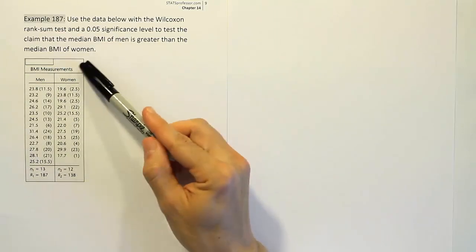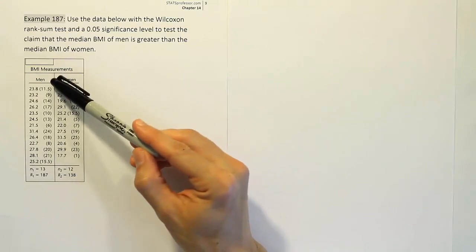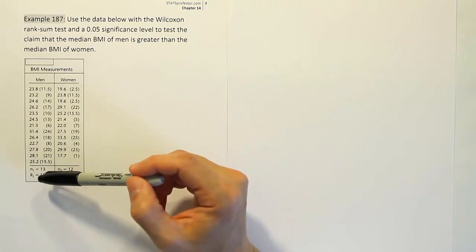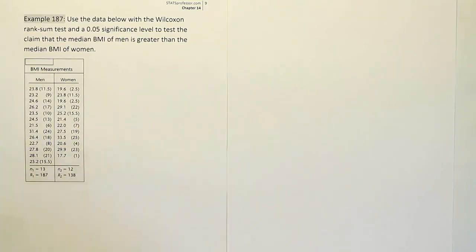They have the BMI measurements for men and women and they've been nice enough to give us the ranks included with the data. They tell us what the sample size is for each column and they tell us the rank total or the rank sum for each column as well. So this has been nicely laid out for us.